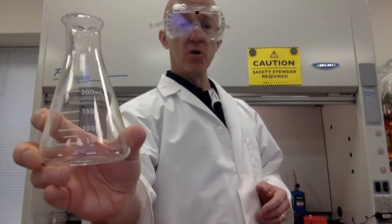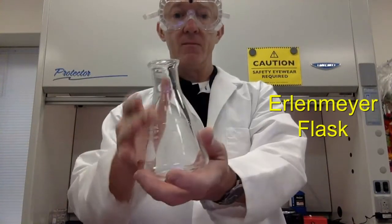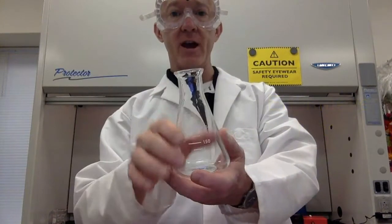If you do expect it to be a little more vigorous, then we use the Erlenmeyer flask. Notice the conical shape, and that prevents anything from splattering out when you're mixing.